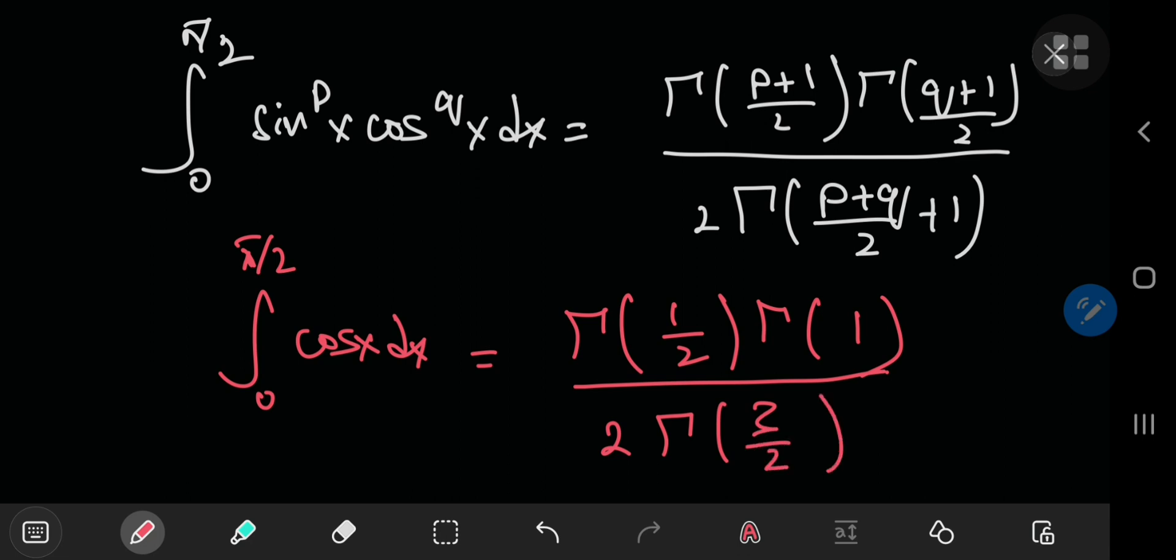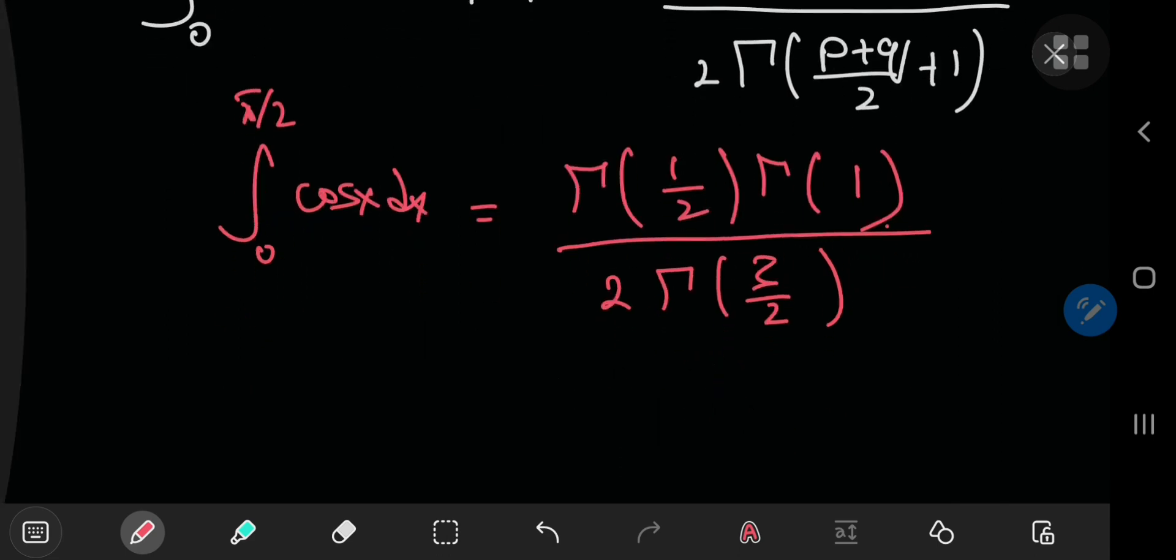And it's okay if you don't know what gamma 1 by 2 is because you would obviously know by now the recursive definition of the gamma function. That is gamma x plus 1 equals x times gamma x.